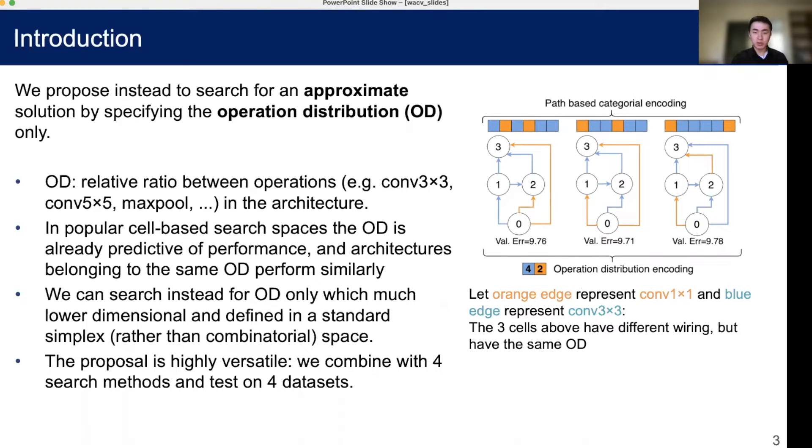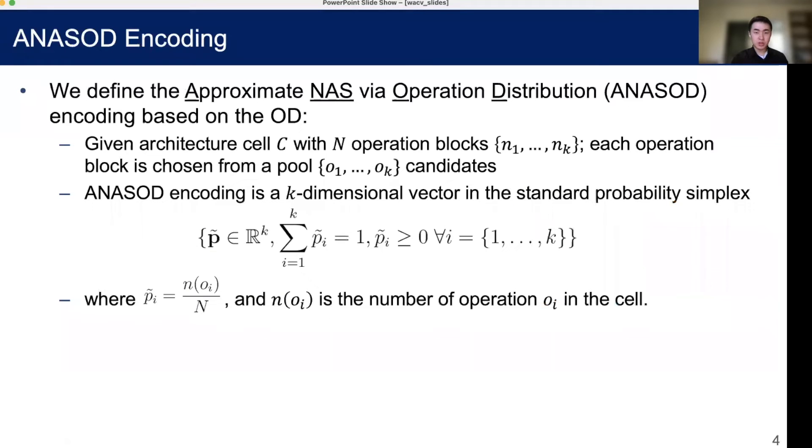We also verify our solution on four different search methods and four different datasets. The ANASOD encoding simply gives the relative contribution of different operators within a cell. That's why they sum to one, because each element represents the relative contribution of one particular operator. So it is on a standard k-dimensional probability simplex, where k is the number of candidate operators.